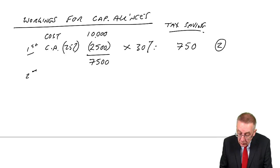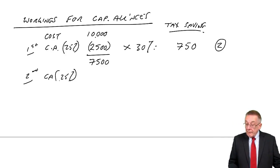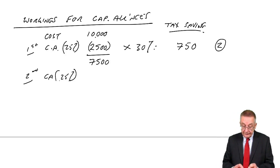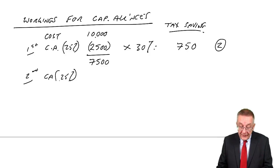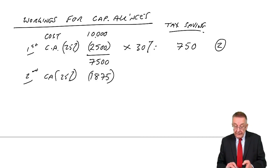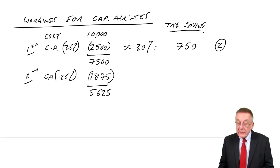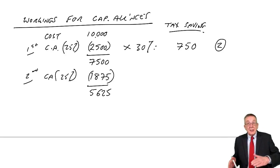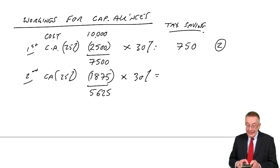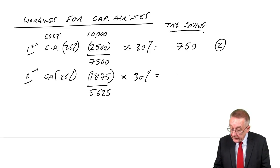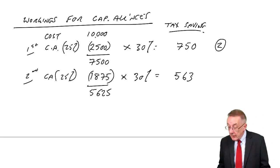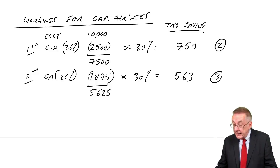The second year: it's reducing balance, so 25% of 7,500 = 1,875, bringing the tax value down to 5,625. The tax saving is 30% of 1,875 = 562.50. Round it — it doesn't matter whether you use 563 or 562. There'll be a saving of approximately 563 at time 3.